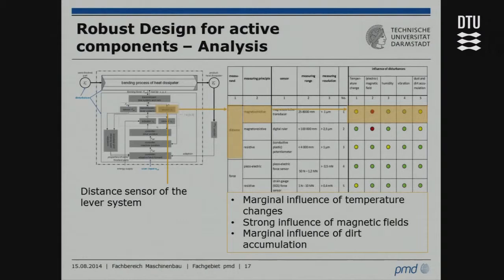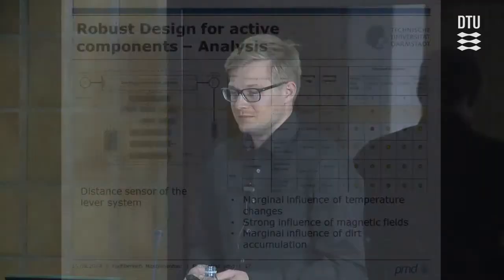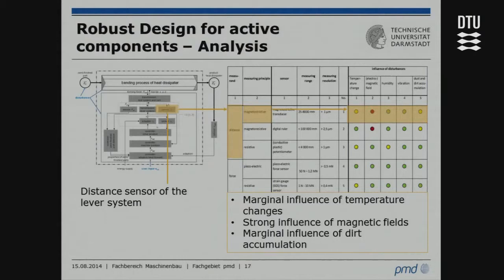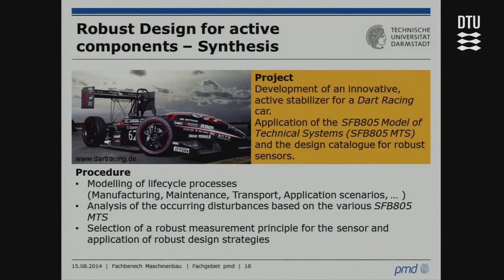Let's see how this can be applied in the example of the free bending machine. On the left side you can see the model of the machine. It has a distance sensor that measures distance using a magnetostrictive principle. There is a marginal influence of temperature changes, a strong influence of magnetic fields, and a marginal influence of dirt accumulation. We can use this information to put the machine in a more robust context — for example, by not exposing it to direct sunlight.